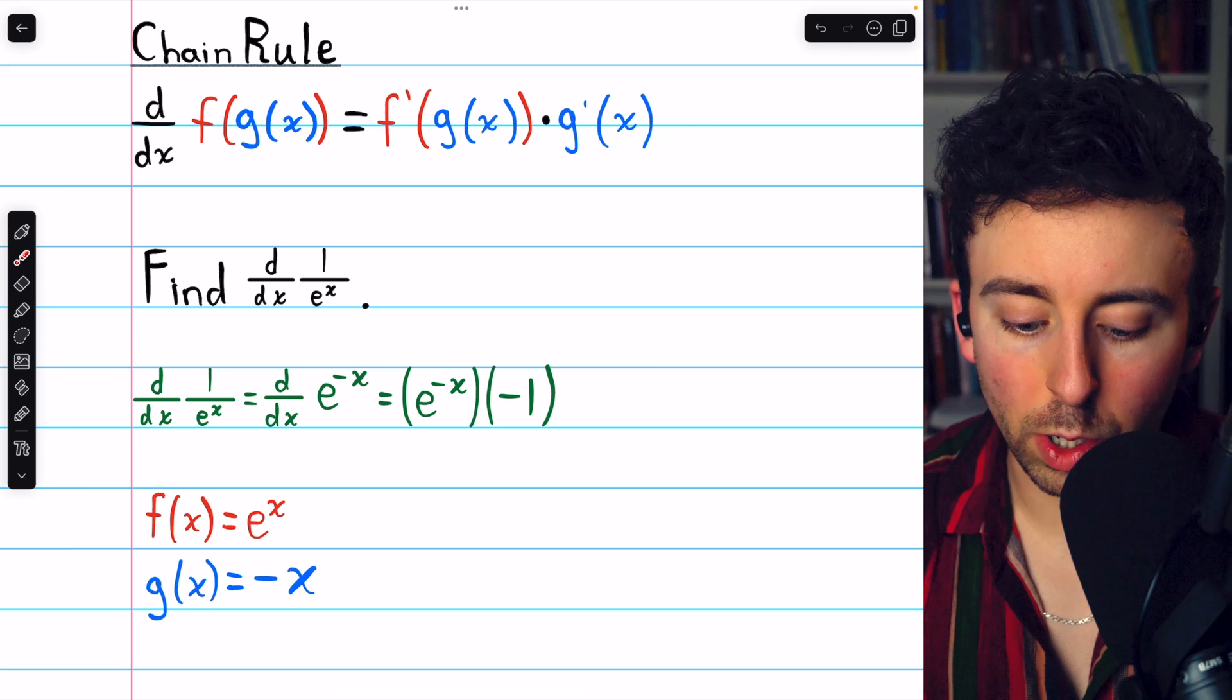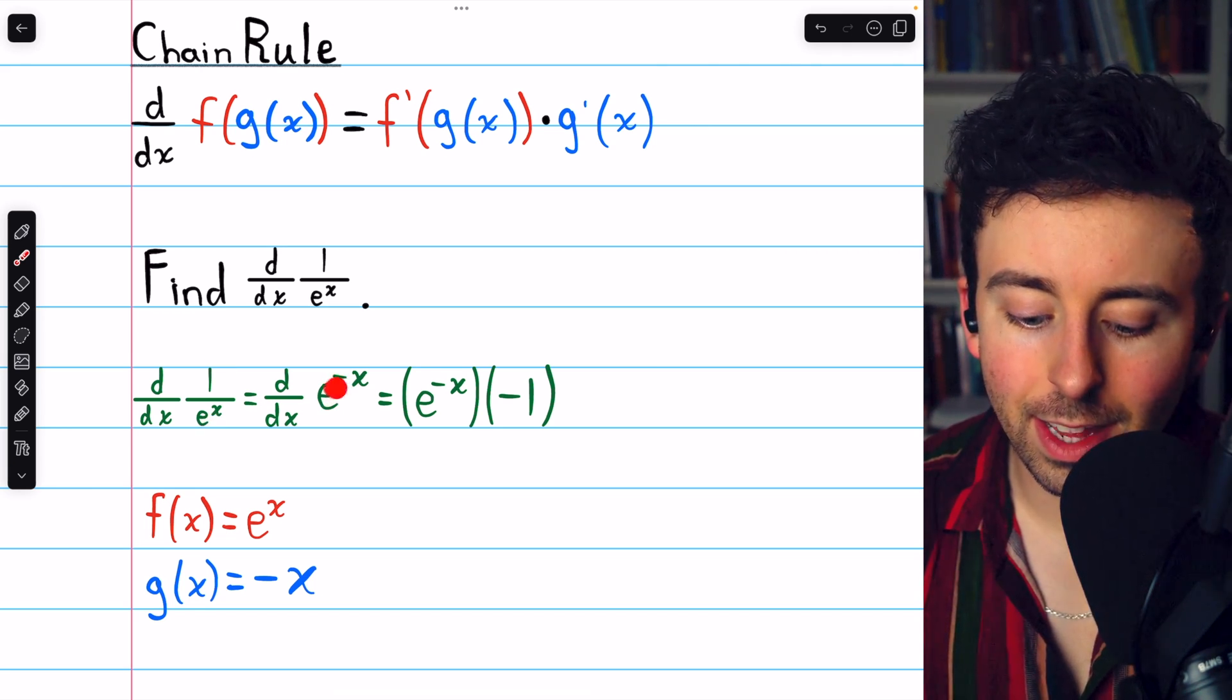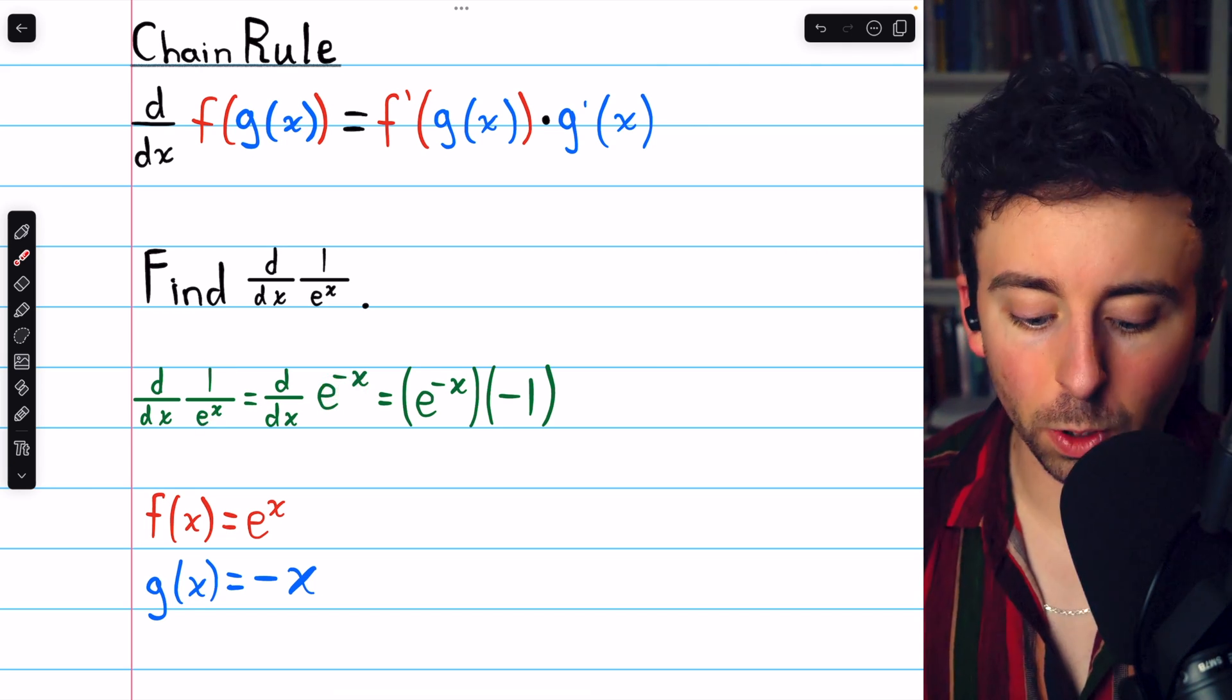So to take the derivative, we first rewrite 1 over e to the x as e to the negative x, and then apply the chain rule.